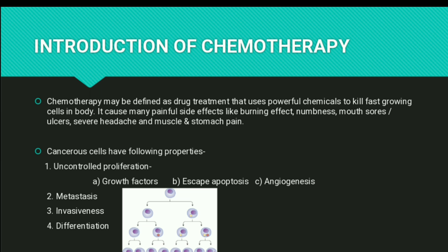The last characteristic of a cancerous cell is differentiation. As shown in the diagram, one cell divides into two, two into four, and four into eight — this is the process by which cancer cells divide themselves in very large numbers rapidly.